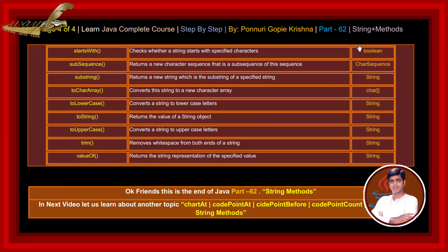startsWith method checks whether a string starts with specified characters. subSequence method returns a new character sequence that is a subsequence of this sequence. substring method returns a new string which is the substring of a specified string.